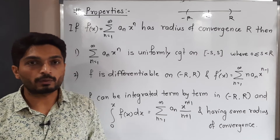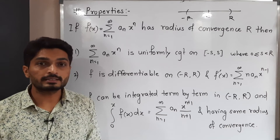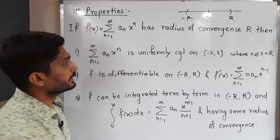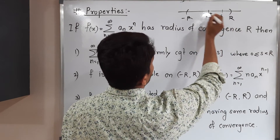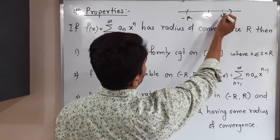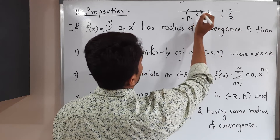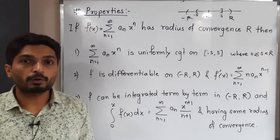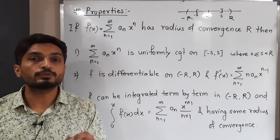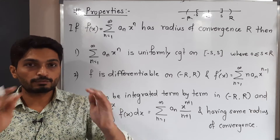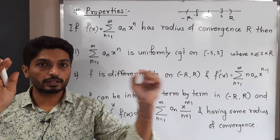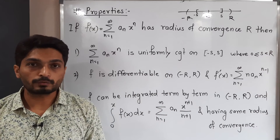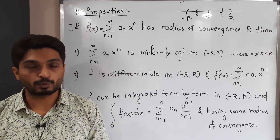We have three interesting properties of power series. The first property: if you take any s such that 0 ≤ s < R, then on the closed interval [-s, s] the given power series converges uniformly. So if you take any subinterval within the interval of convergence, the power series converges uniformly on that closed interval.